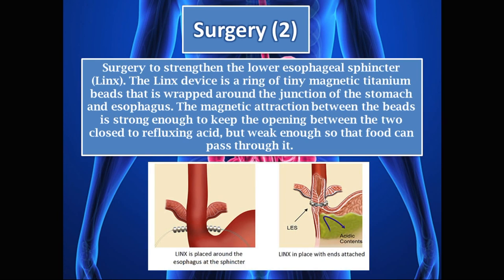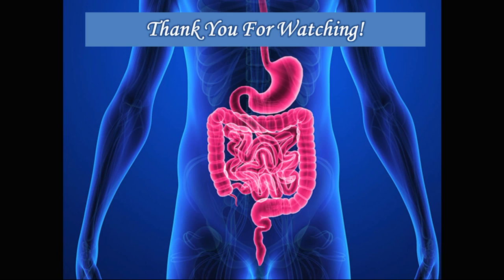Another surgical option is the LINX device, which strengthens the lower esophageal sphincter. The LINX device is a ring of tiny magnetic titanium beads wrapped around the junction of the stomach and esophagus at the LES. The magnetic attraction between the beads is strong enough to keep the opening closed to refluxing acid, but weak enough to allow food to pass through. You can see the LINX placed around the esophagus on screen, preventing acidic content from refluxing back.